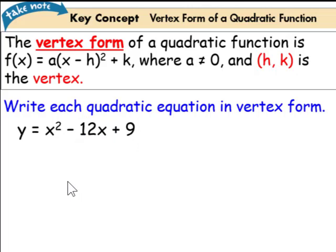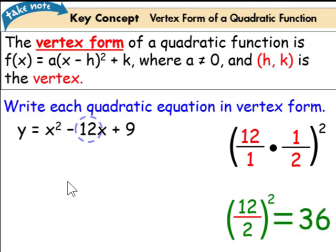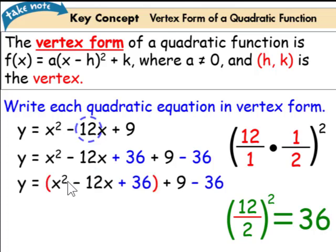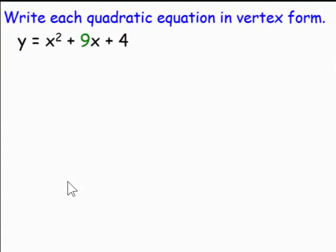Let's try a similar one. We will take half of the b term, which is 12, and square it. This will give us 12 over 2 squared. 12 divided by 2 is 6. 6 squared is 36. We will add and subtract 36. Now we have a perfect square trinomial. Its factored form is x minus 6 squared. 9 minus 36 is negative 27.